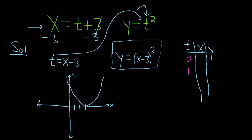So plugging in 0 for x, it's going to give us x equals 3. And plugging in 0 for y, it'll give us 0 because 0 squared is 0. So when t is equal to 0, we're right here at the vertex of this parabola.